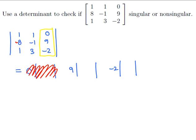The submatrix for the 9 we get by crossing off the row and the column that contains the 9 to get 1, 1, 1, 3.